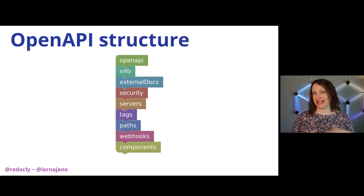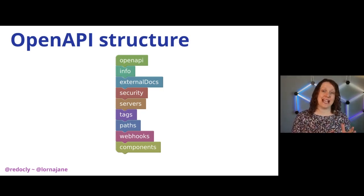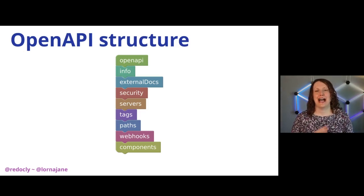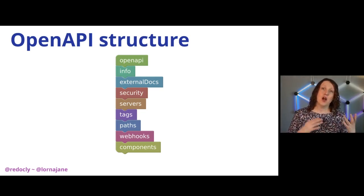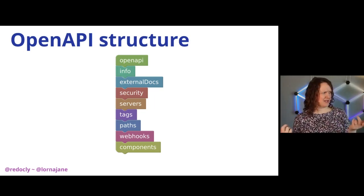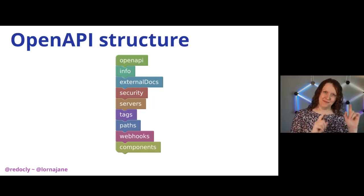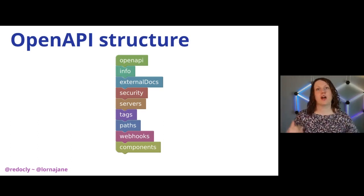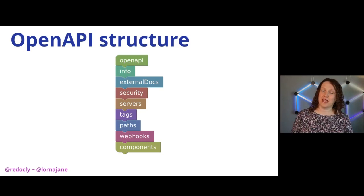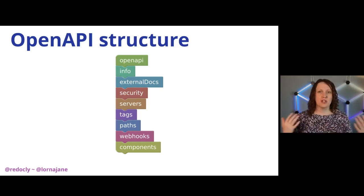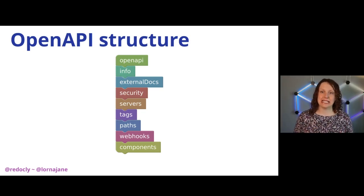These are the top-level elements as described by the specification. Not every specification has every one of these and there are no rules about what order they should be in, but I've picked a fairly conventional order. OpenAPI is always the first thing in the file and it will tell you what version of OpenAPI the rest of the file uses. This is different from the version information in the info block where you can say what version of the API description this is. The info block also holds a bunch of other metadata, and that's really important when your API gets listed in catalogues.